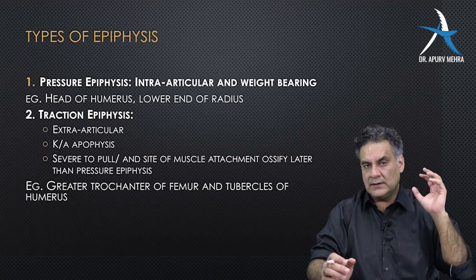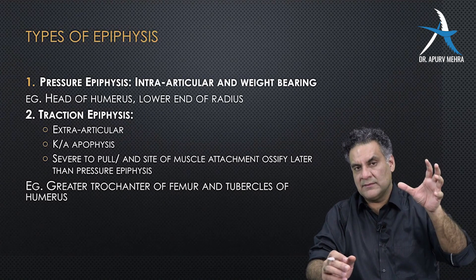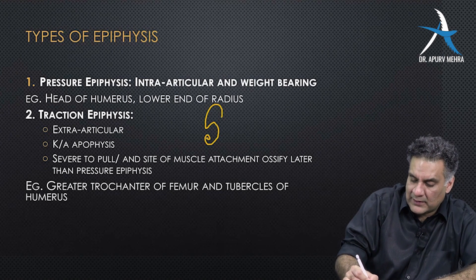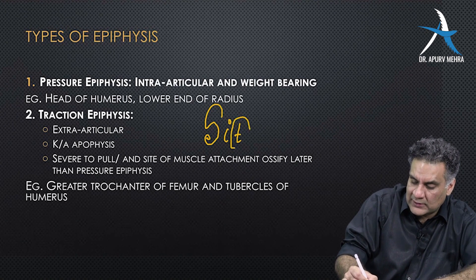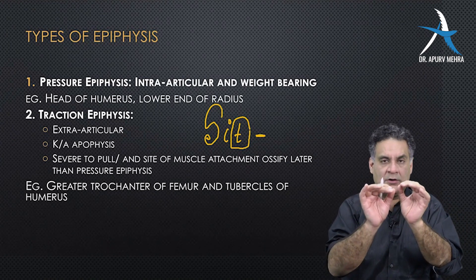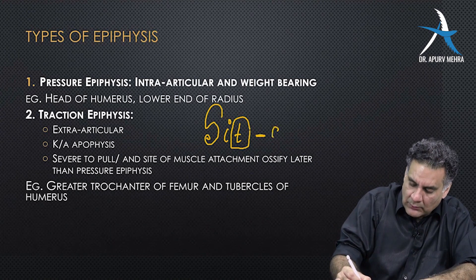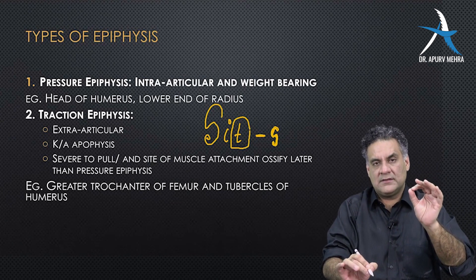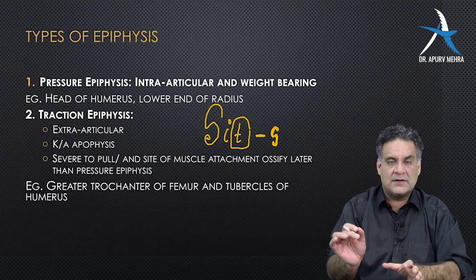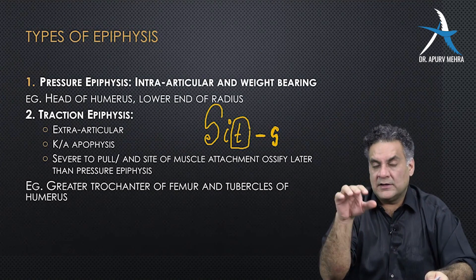Look at the rotator cuff muscles which sit on the tuberosities. They are remembered by the mnemonic: supraspinatus, infraspinatus, teres minor — these three go on the greater tuberosity, and subscapularis goes on the lesser tuberosity. Subscapularis is the internal rotator.